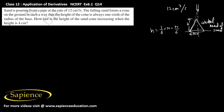How fast is the height of the sand cone increasing when the height is 4 cm? We have to find dh/dt when h equals 4 cm — that is, the rate of increase in the height.